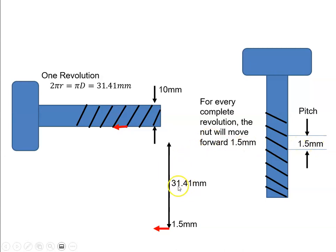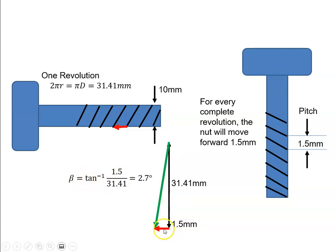So if I have these two values I can work out the angle beta, because we can say that beta is the inverse tan of opposite over adjacent. When we put those values in we get 2.7 degrees. So that's what it is for a nut and bolt.